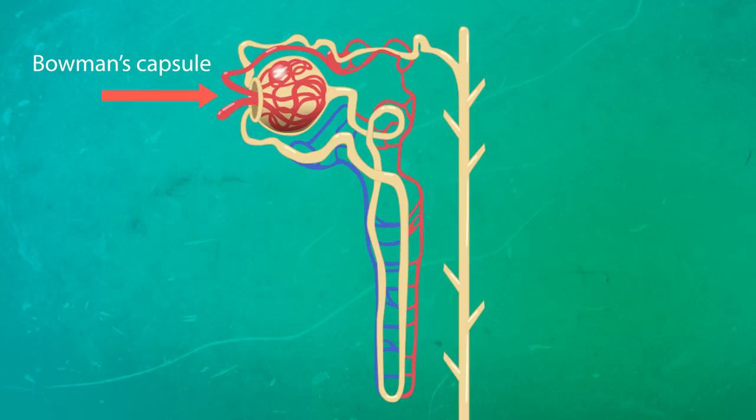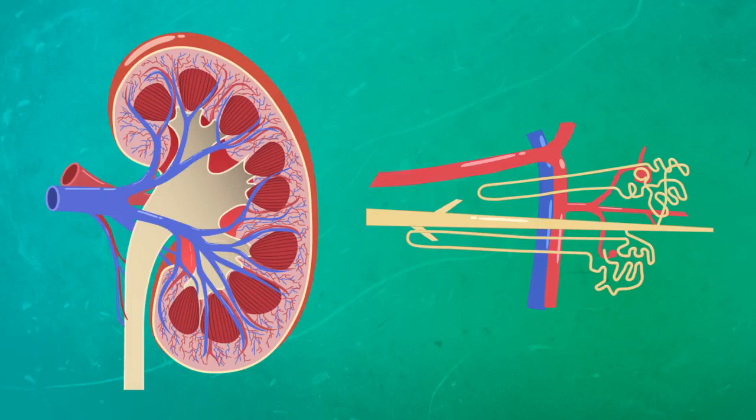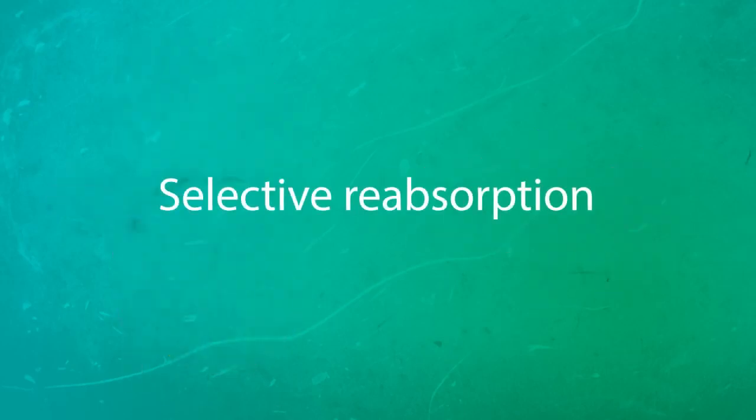This process is called ultrafiltration. The nephron is a coiled tube that moves through the kidneys. As the filtrate passes along, anything that the body needs to keep is taken back into the blood by a process called selective reabsorption.